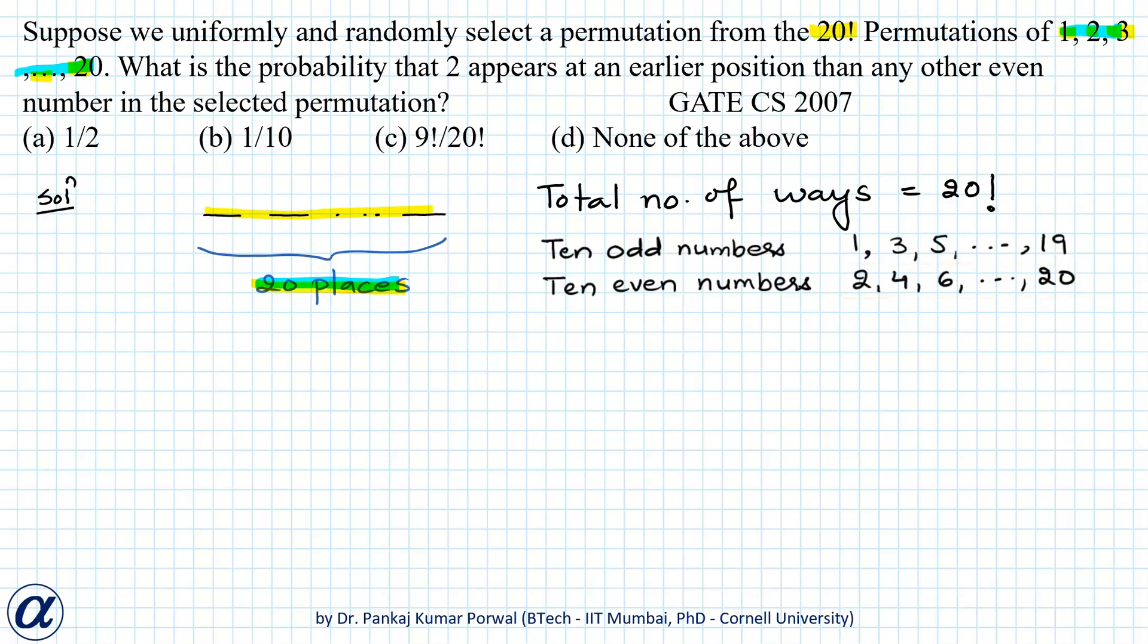Now out of these 20 factorial permutations, we want to find the probability that 2 appears at an earlier position than any other even number. So basically we want to find number of permutations where 2 appears before any other even number.